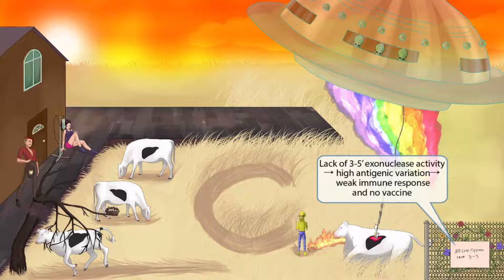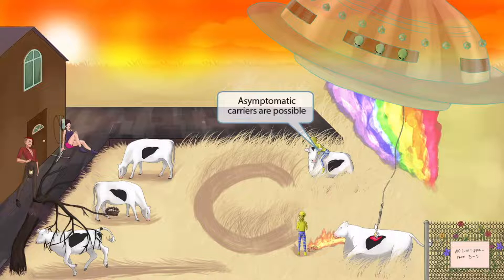Fearful of the fire his comrade caused, this little alien has decided to hitch a ride on a cow to be carried away from harm. This cow carrying the alien away from the fire represents the fact that patients can be carriers of hepatitis C without having an active infection. This means carriers won't have symptoms, but if they engage in IV drug use and share needles, they can infect somebody else — asymptomatic carriers in hepatitis C.